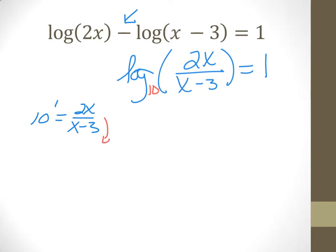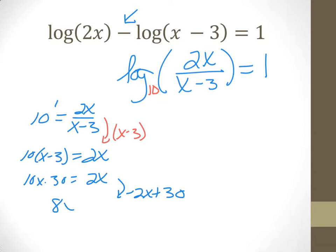We're going to multiply by x minus 3 to eliminate the fractions. Expanding the left side gives 10x minus 30 equals 2x. Subtract 2x and add 30 to get 8x equals 30. Divide both sides by 8 and x equals 30 over 8.